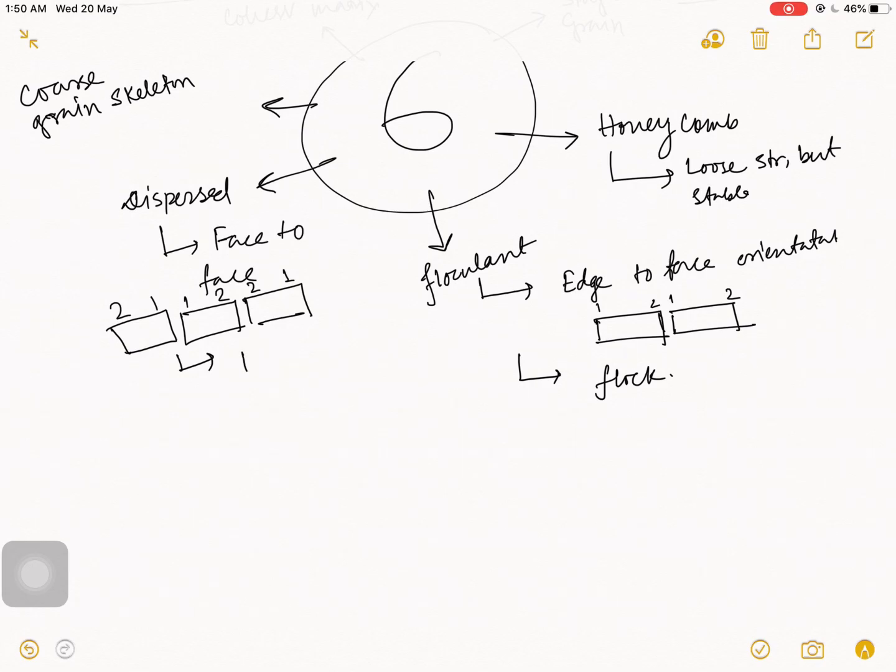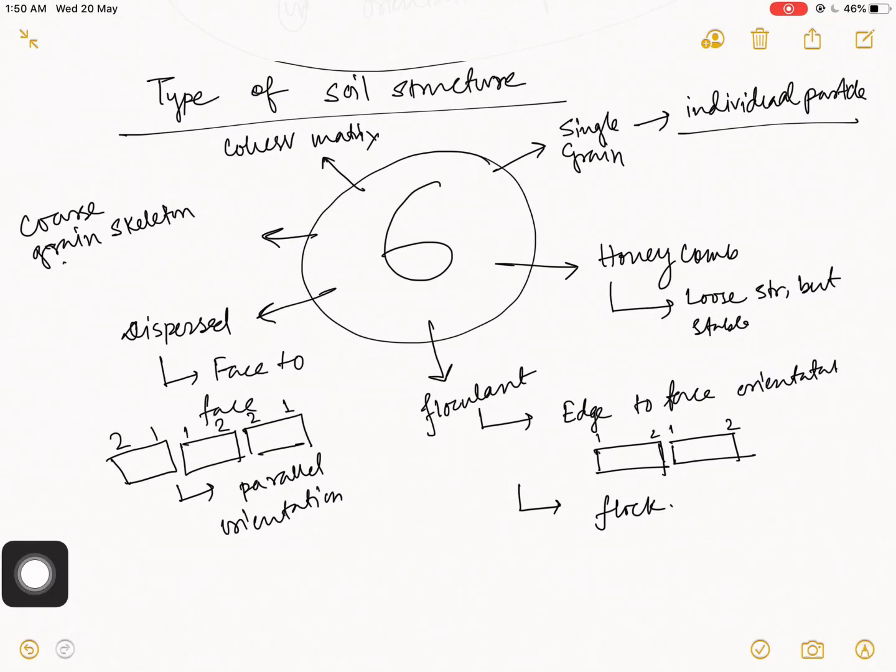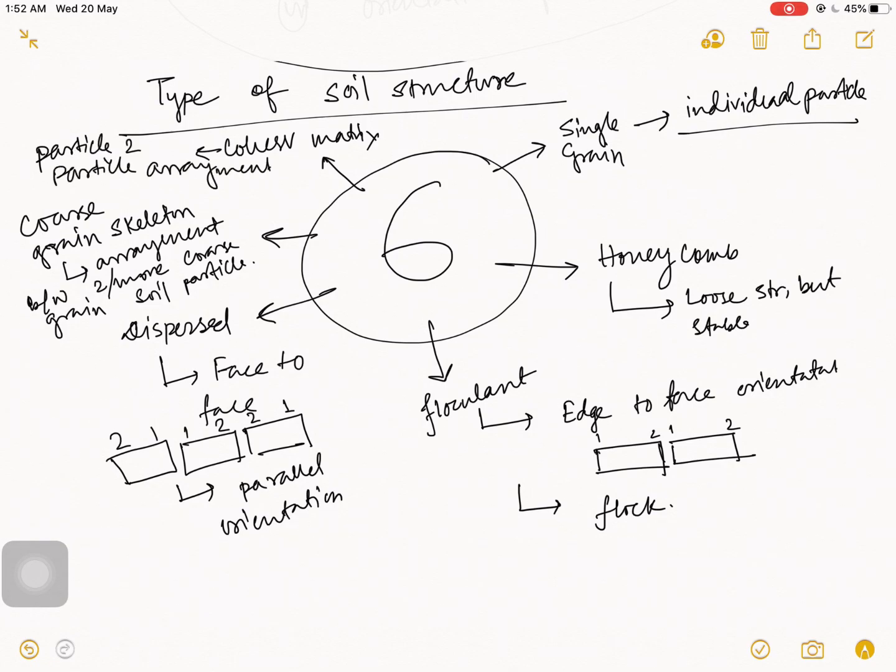Some people says this is the parallel orientation. And coarse grain skeleton means arrangement between two or more coarse grain soil particles. In cohesive matrix there are no chance of particle to particle arrangement.